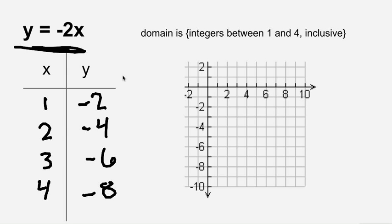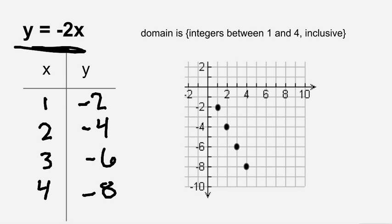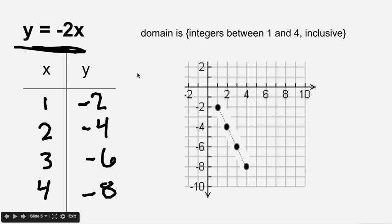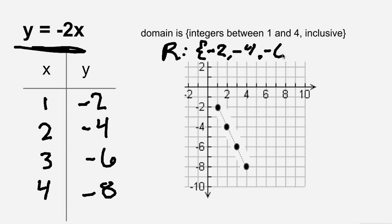When we graph this equation, we'll put points on each of the x values — so there are your four points. Because the domain is integers and not all numbers, it's going to be a dotted line connecting them. The dotted line shows that there are only values where there are solid points; for example, there's no point at x equals 1.5. The range for this equation would be negative 2, negative 4, negative 6, and negative 8, because those are the values that y will hit when x is in its domain.